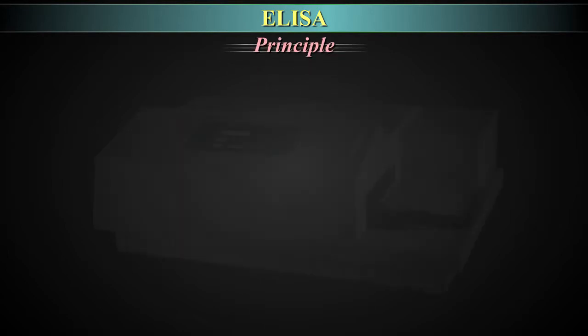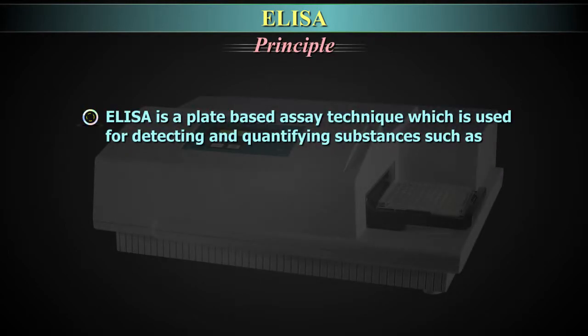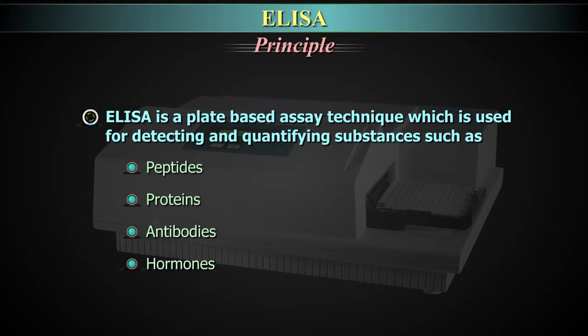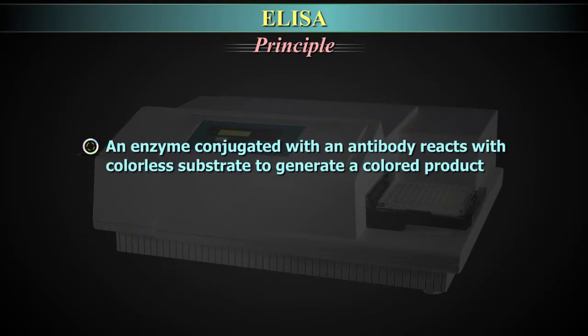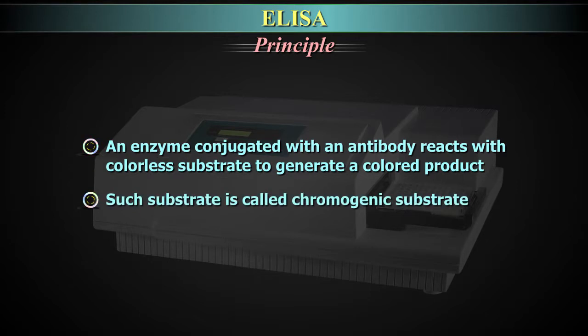Principle. ELISA is a plate-based assay technique which is used for detecting and quantifying substances such as peptides, proteins, antibodies and hormones. An enzyme conjugated with an antibody reacts with a colourless substrate to generate a coloured product. Such a substrate is called a chromogenic substrate.